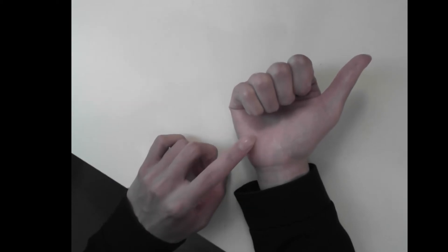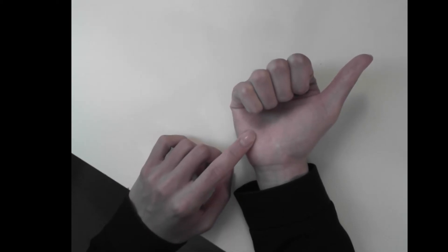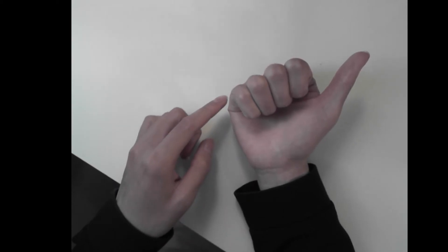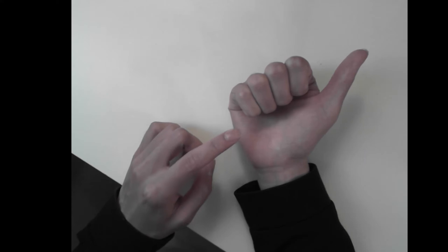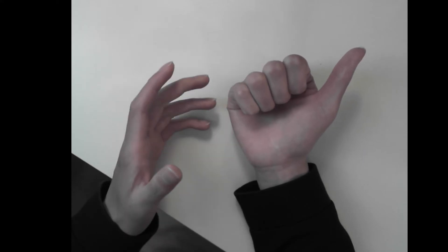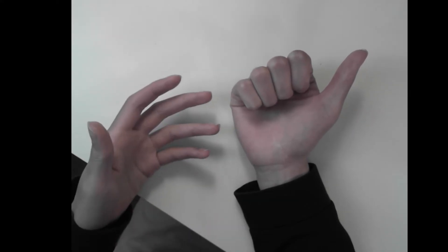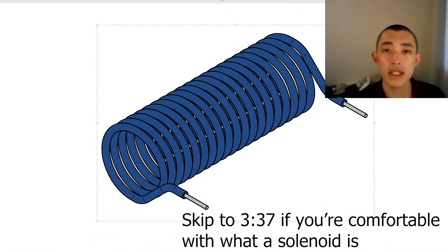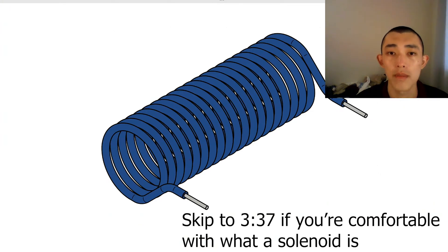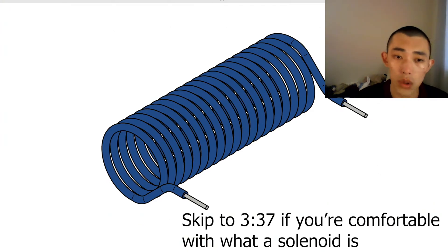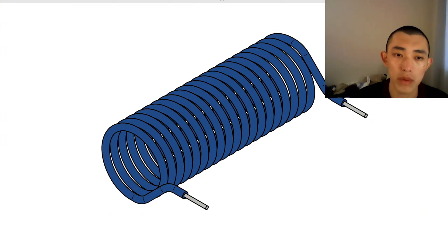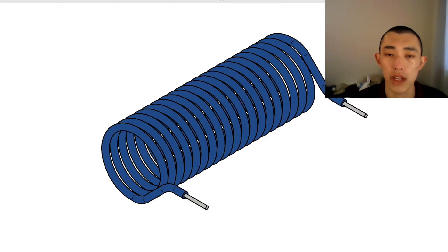Before we go any further with the right-hand solenoid rule, let's have a quick refresher on what exactly we're trying to predict and visualise with our right hand. This here is a solenoid — it is a coil of wire that has been wound round and round, you can imagine around maybe a Coke can, round and round, over and over again.